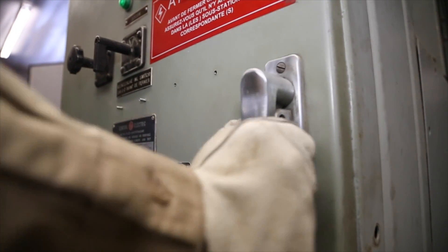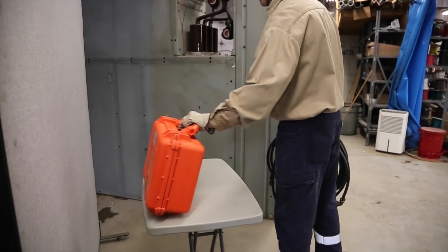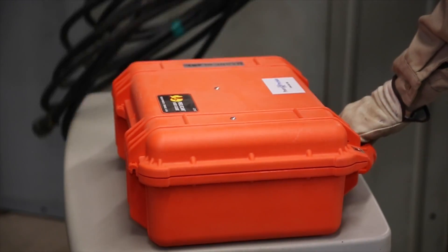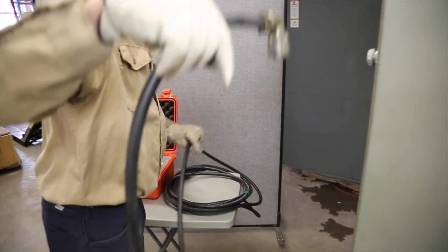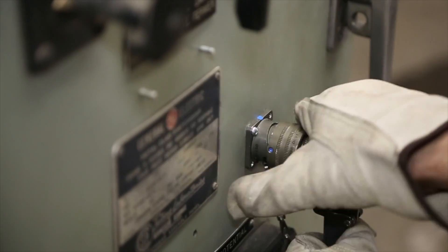Close the breaker door. Connect the 30-foot control cable to the connector on the breaker door and the operator panel.